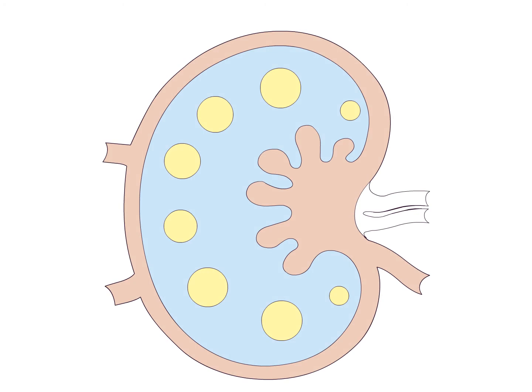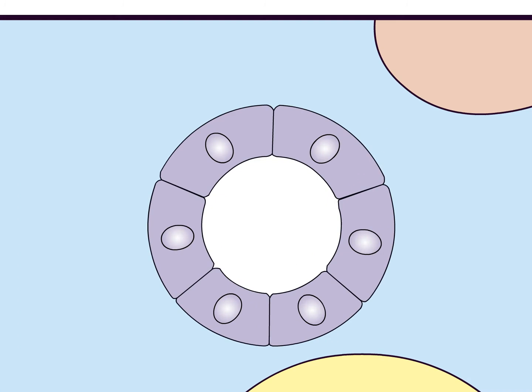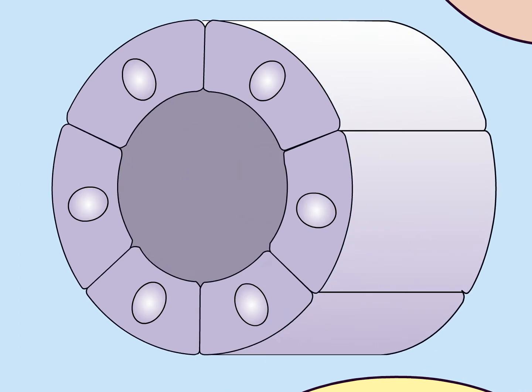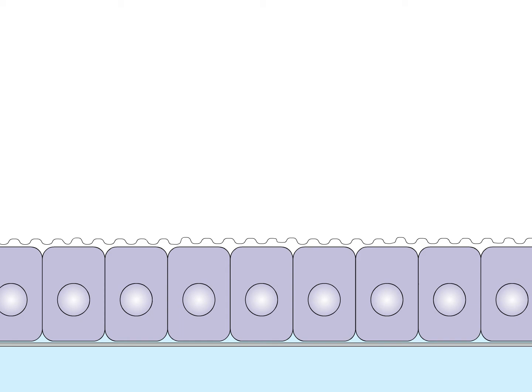Naive T lymphocytes leave the bloodstream across the specialized endothelial walls of blood vessels, called high endothelial venules, or HEV, in the T cell areas of lymphoid organs. This specialized endothelium expresses a number of molecules involved in lymphocyte homing to the lymph node.